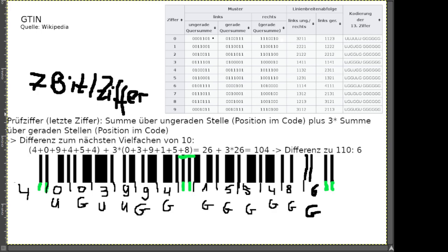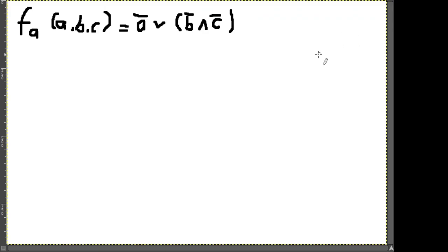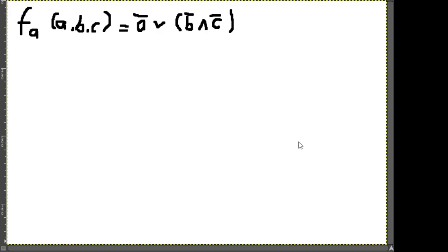Jetzt geht es um kanonische Formen – ein bisschen logisches Denken und Umrechnen. Wir haben Funktionen mit verschiedenen Variablen, und da sollen jeweils kanonische DNF, kanonische KNF und Reed-Muller-Formen notiert werden. Was wissen wir über eine DNF? Wie sieht eine DNF überhaupt vom Aufbau aus?